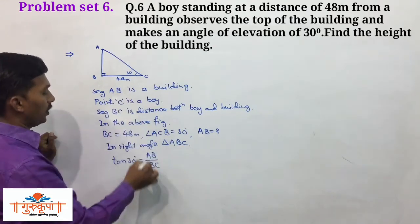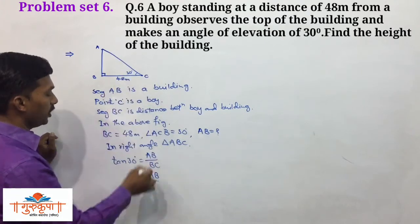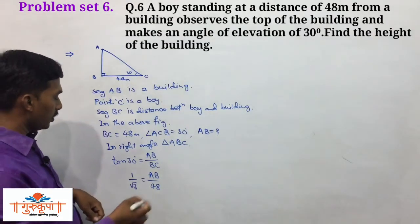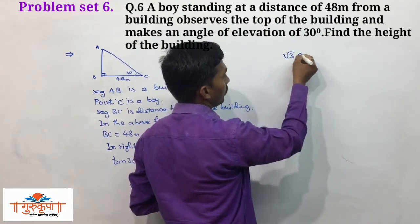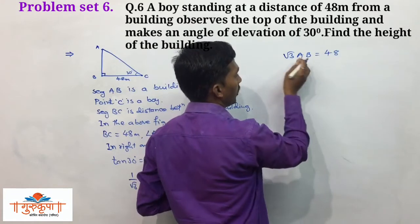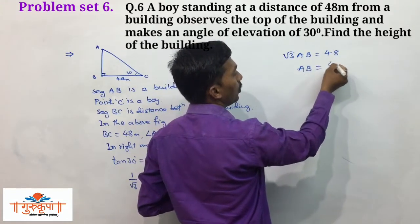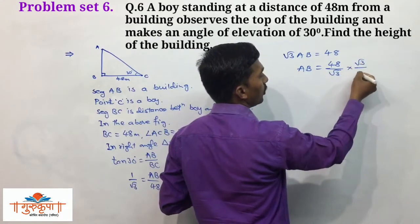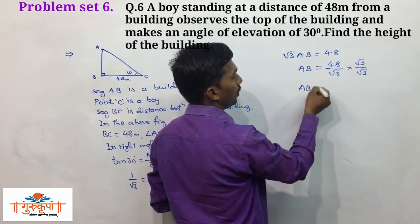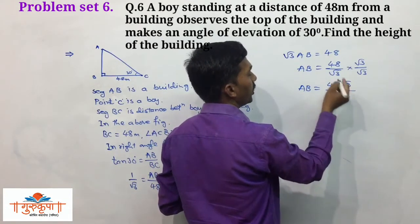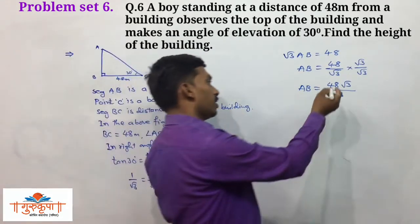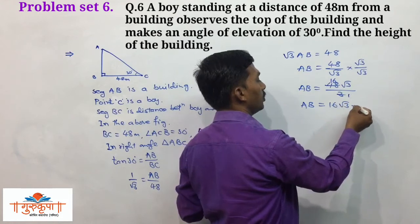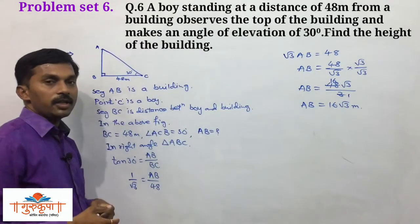We rationalize the denominator: multiply numerator and denominator by √3. So AB = (48√3)/3 = 16√3. The height of the building is 16√3 meters.